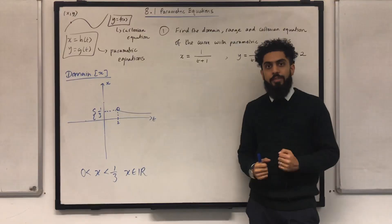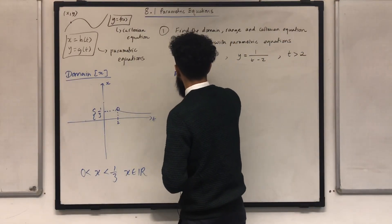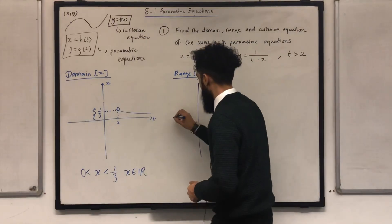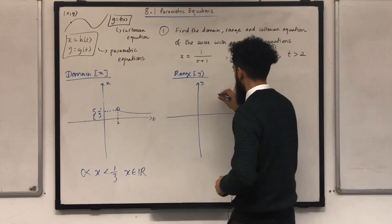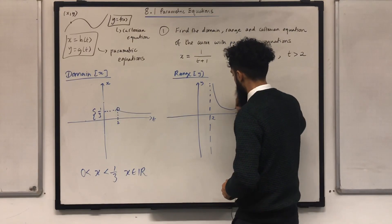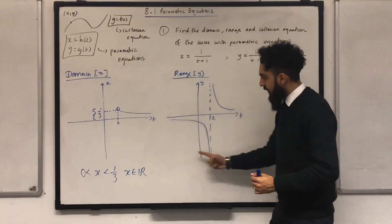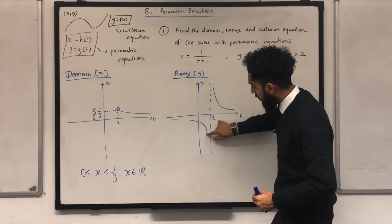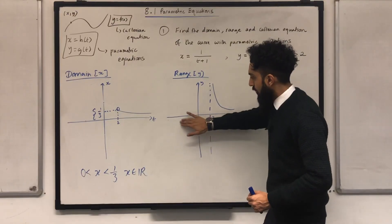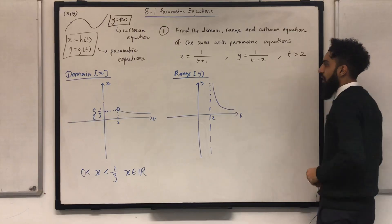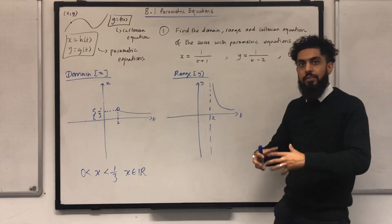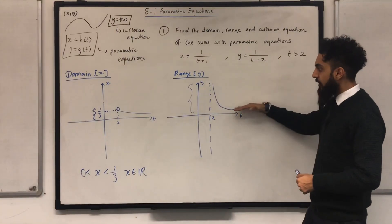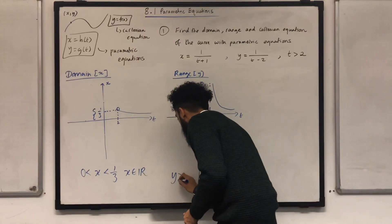Now I'm going to look at the range, which represents y. My first step is to sketch y against t for t any real number. Now I want to restrict this particular graph for t is greater than 2, getting rid of any part that represents t smaller than or equal to 2. That's my sketch of y against t for the restriction t is greater than 2. Focusing on the y-axis, I can see that y is going to be greater than 0 — so y is greater than 0, y is a real number.